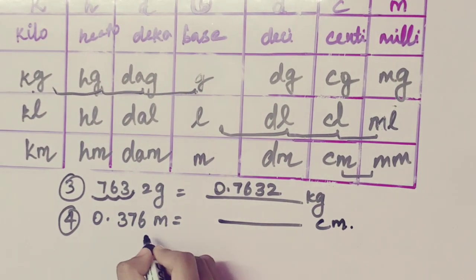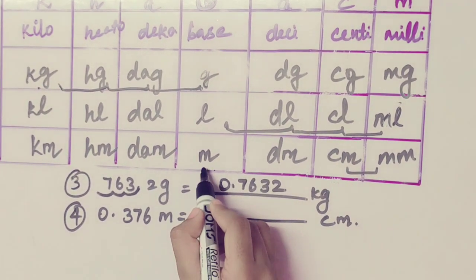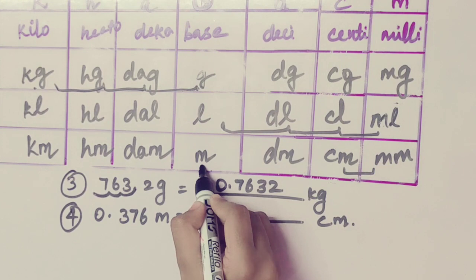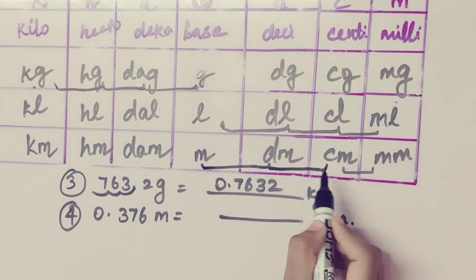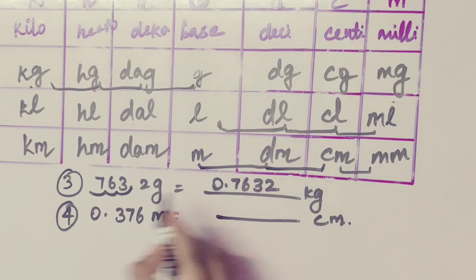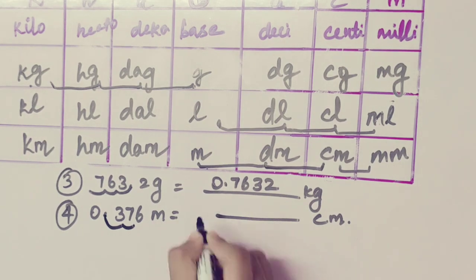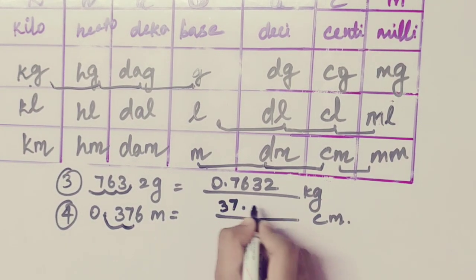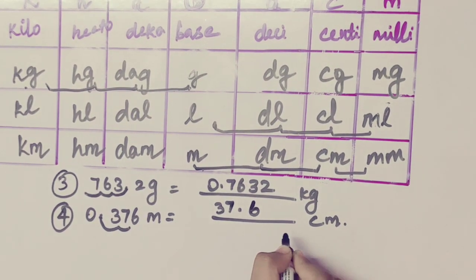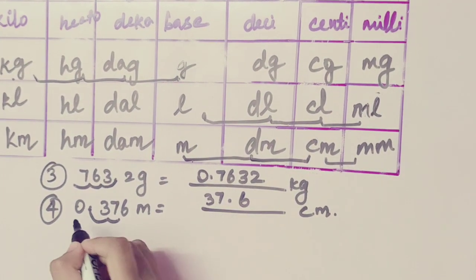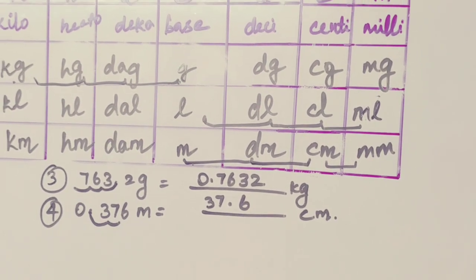0.376 meter equal to dash centimeter. Meter to centimeter — two times to the right side: one, two. So 37.6 centimeter is the answer. In the table, moving right side means moving the point to the right.